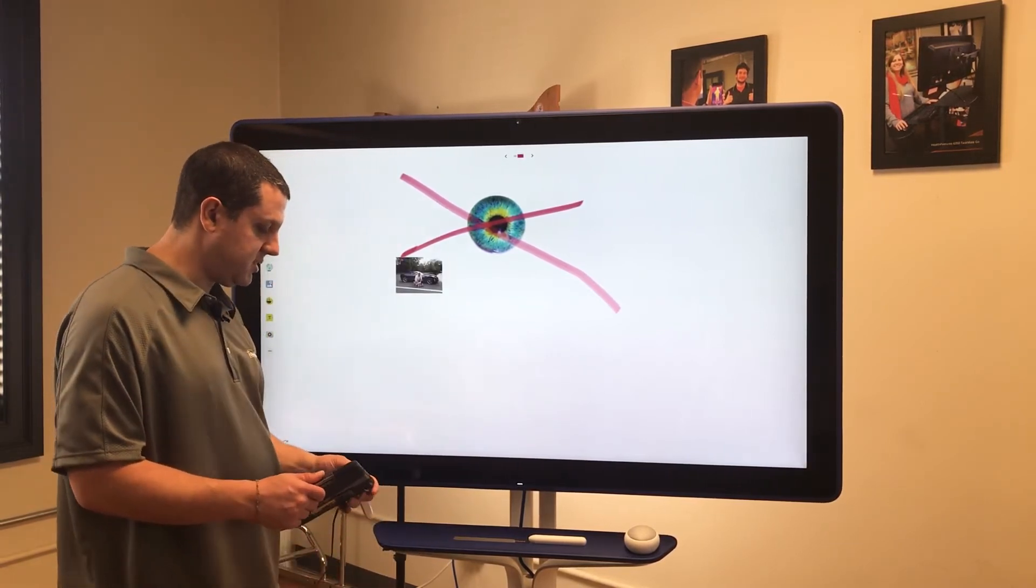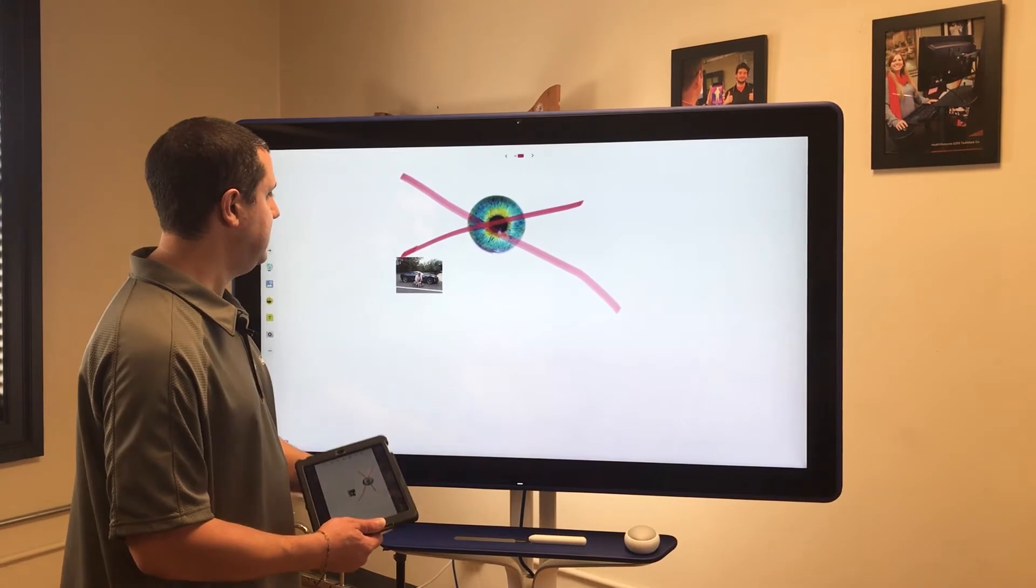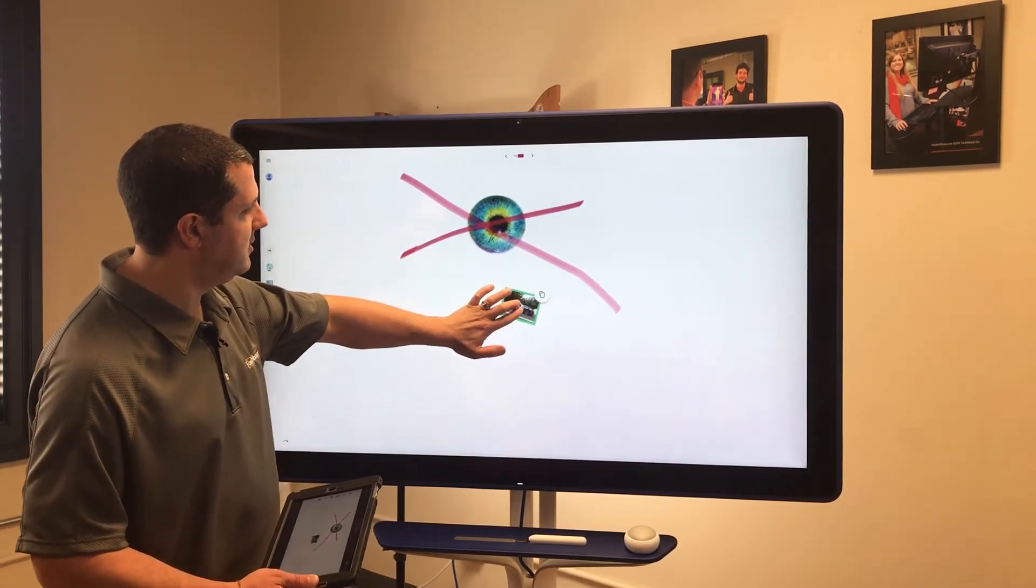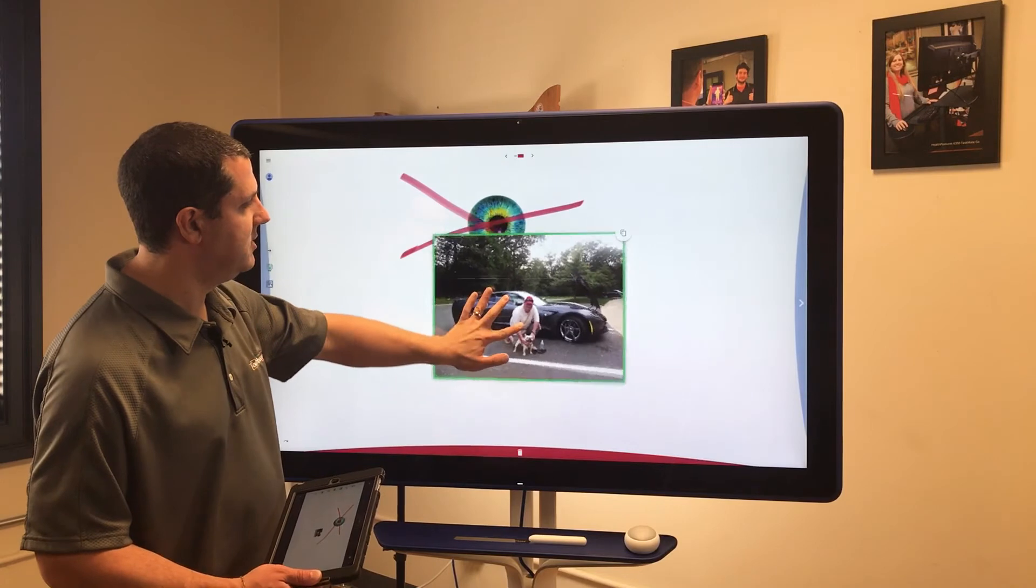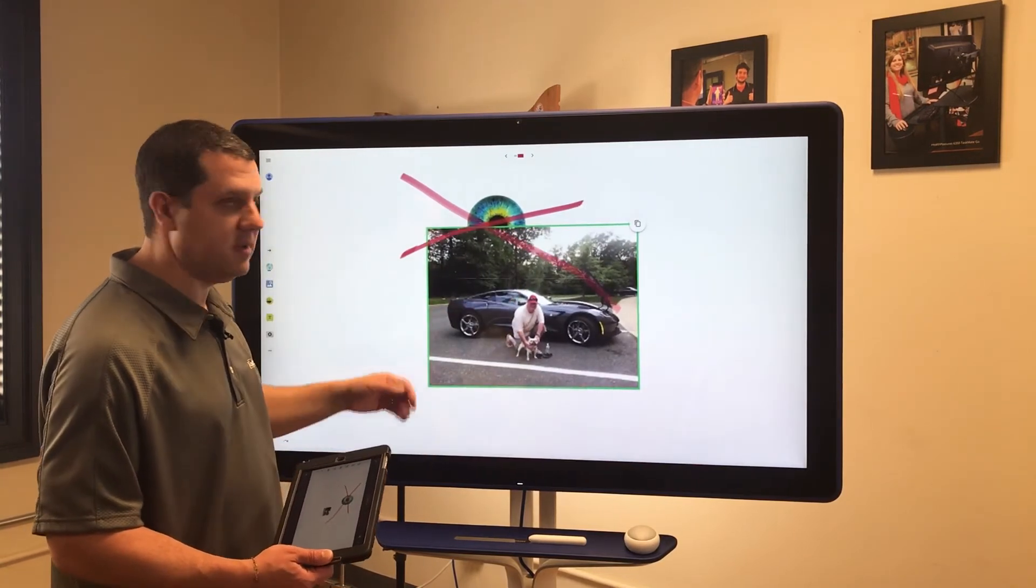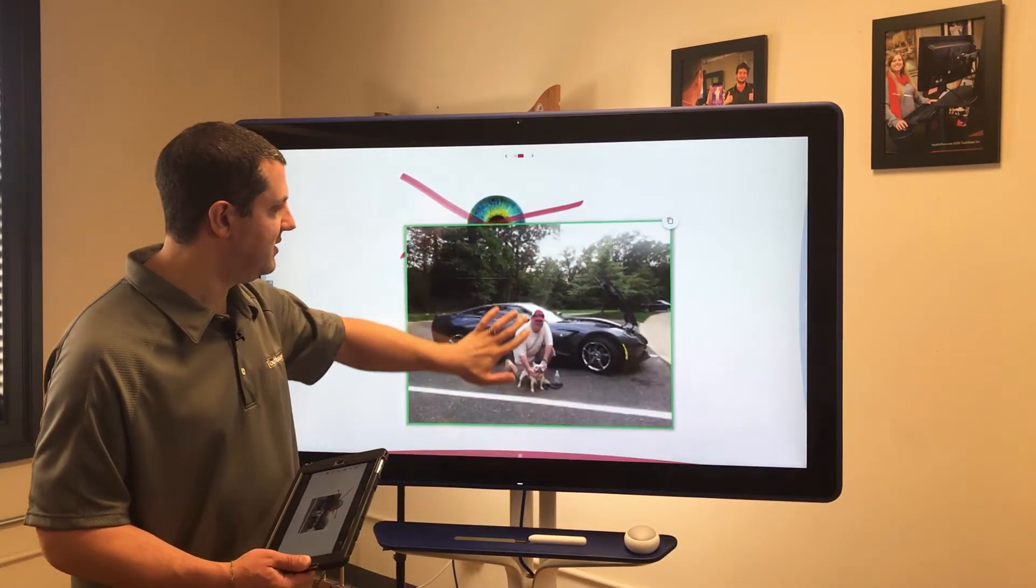So I just added this picture to it and now that that's up here on the Jamboard it's another object in the Jam that I can manipulate. I can move it around, blow it up, shrink it, duplicate it, delete it, whatever you want to do.